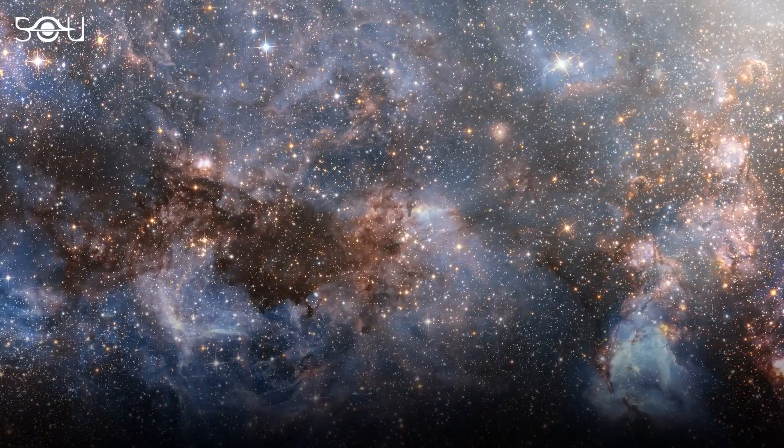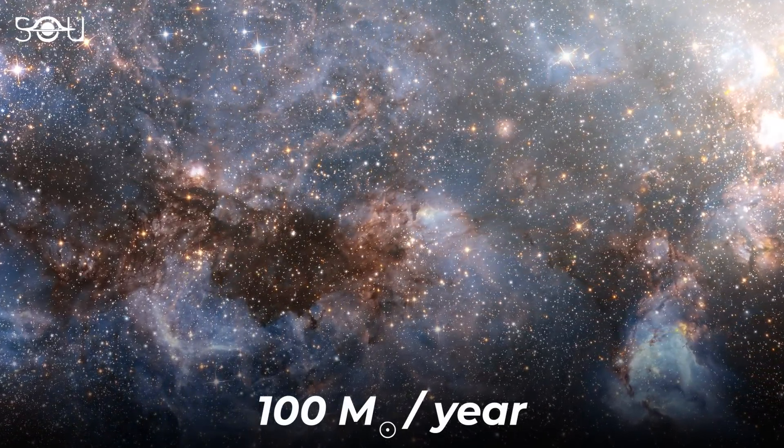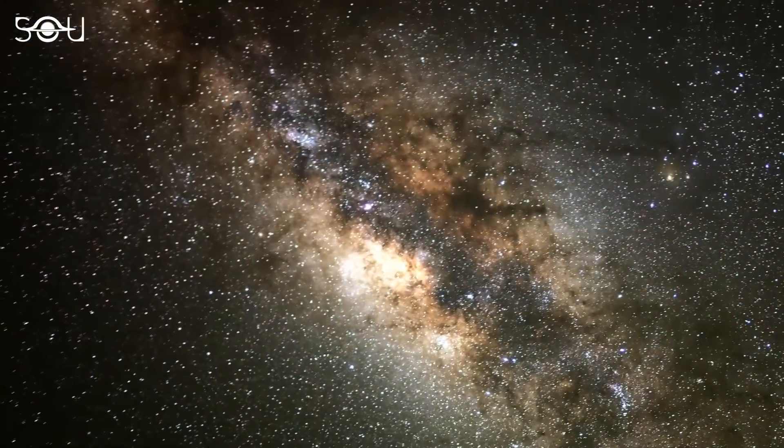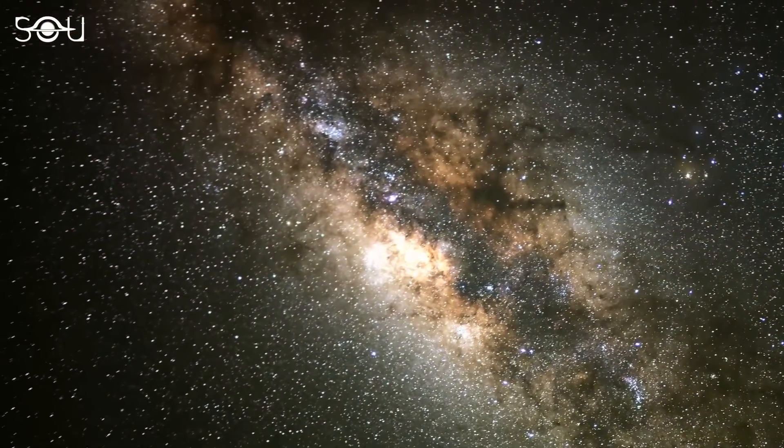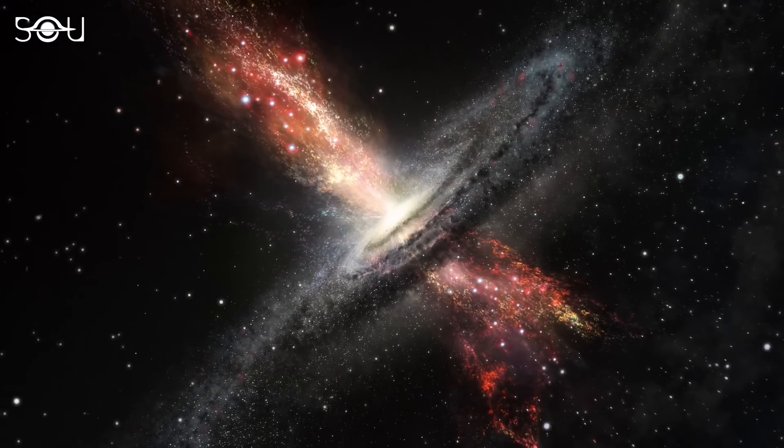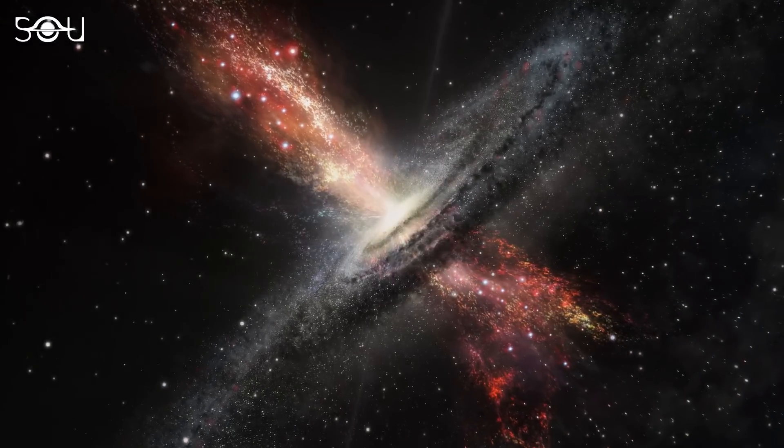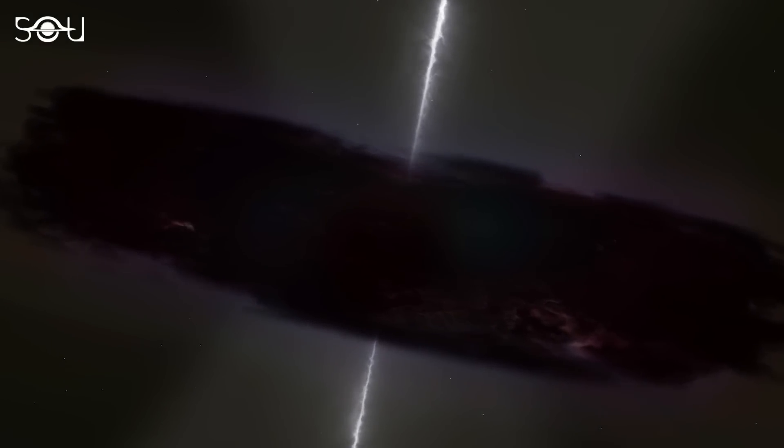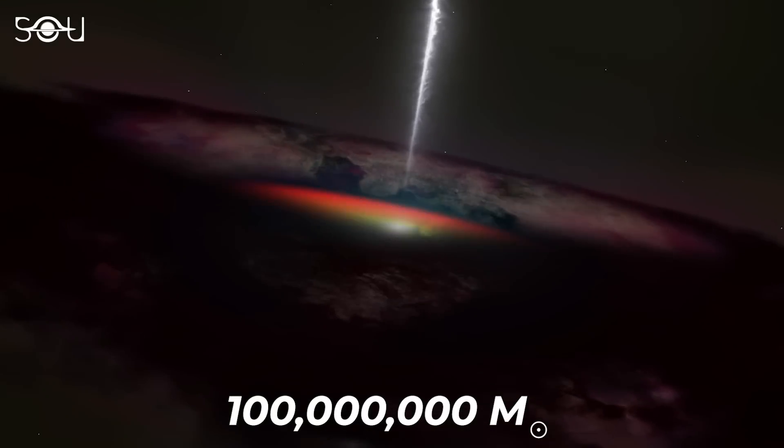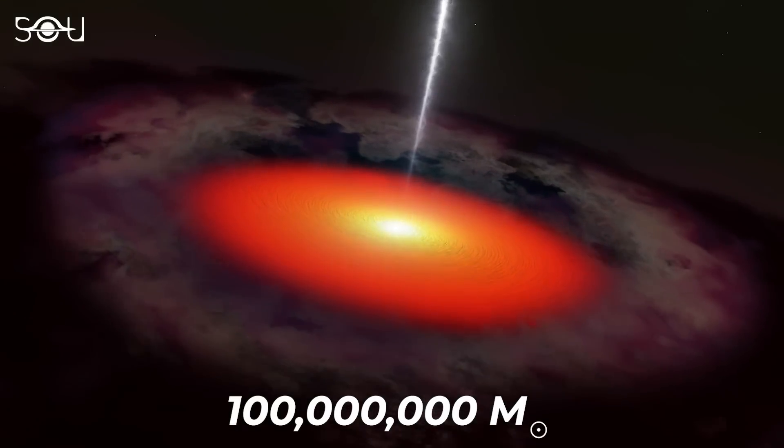If it is a starburst galaxy, the star formation rate must be about 100 solar masses per year. That's almost 30 times the rate of the Milky Way. But if the luminosity of HD1 is due to quasar activity, then the mass of the central black hole must be around 100 million times that of the Sun, which is unusual given the epoch we are observing.